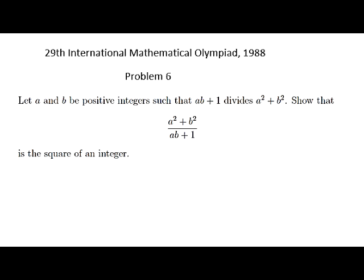This is problem 6 of the 29th International Math Olympiad in the year 1988. If A and B are positive integers, such that AB plus 1 divides A squared plus B squared, then the value of the ratio A squared plus B squared divided by AB plus 1 is the square of an integer. The proof of this statement uses an interesting method called Vieta-jumping.